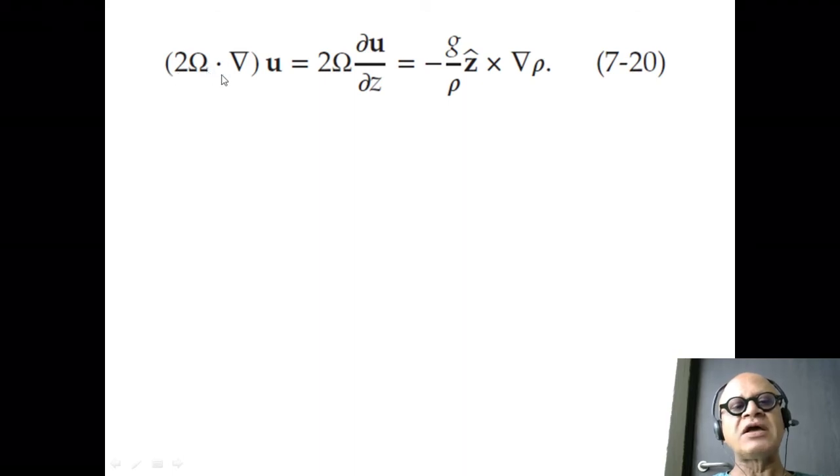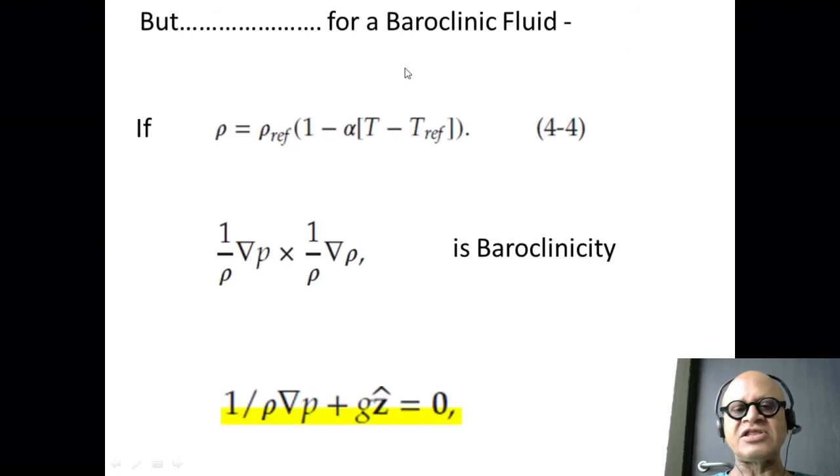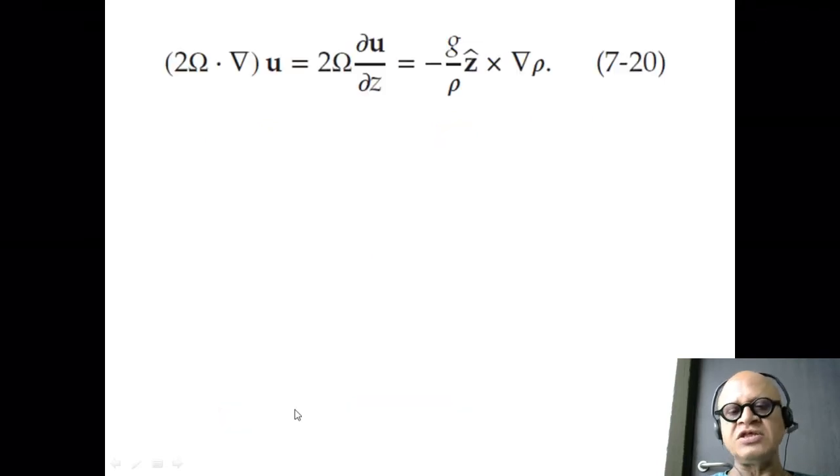So we're going to plug that into our old equation, the thermal wind 2Ω·∇u on this side, which is reduced to 2Ω du/dz because omega here is only in the z hat direction. And we replaced the right hand side by grad rho crossing with this, which gave us -g/ρ z hat cross grad rho. Why? Because obviously this is related to the temperature gradient.